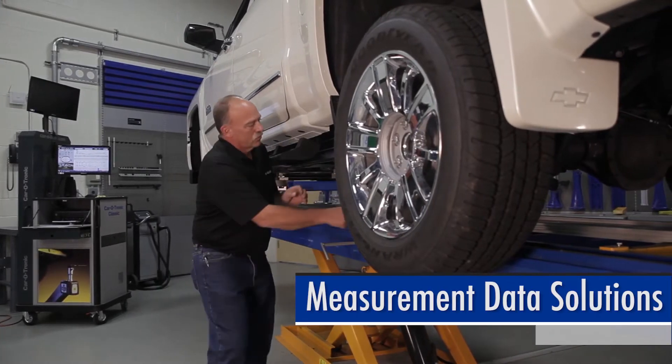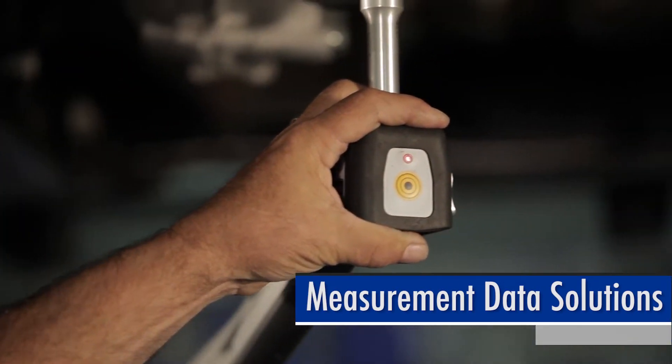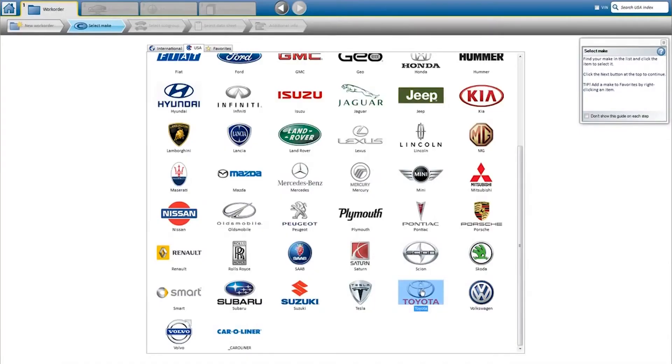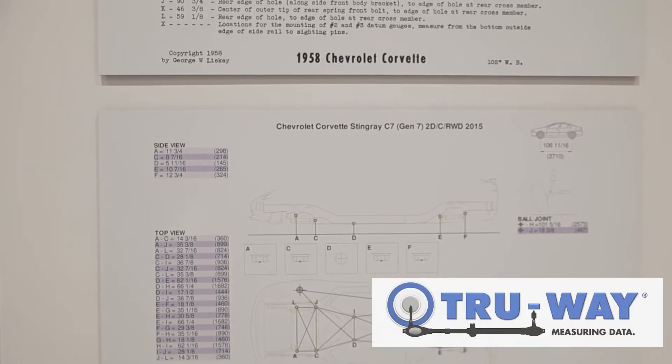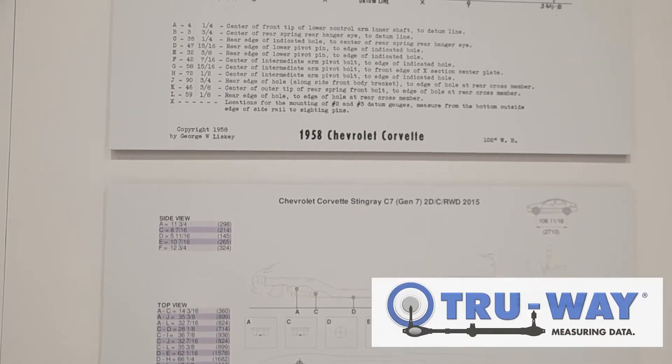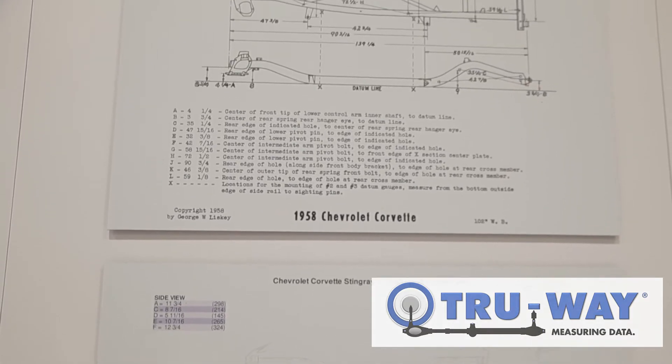We recently launched Vision 2 software. We have over 15,000 vehicles for data in that. So the TruWay data we've had for years, and you can take your classics to modern day. Our Vision 2 software is for all the vehicles we have.